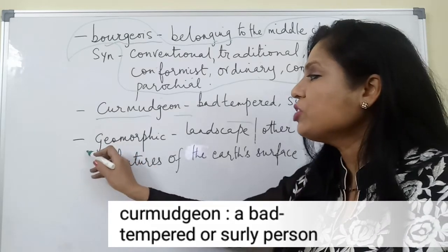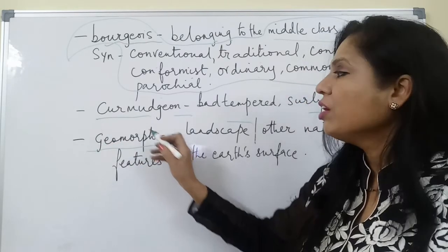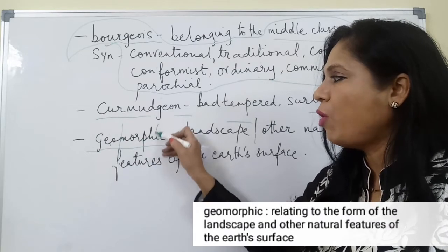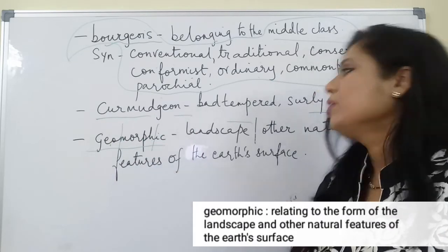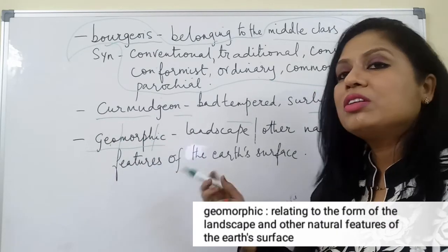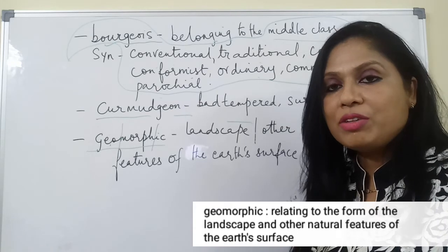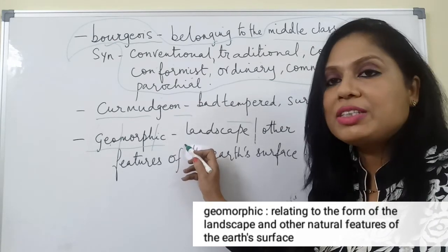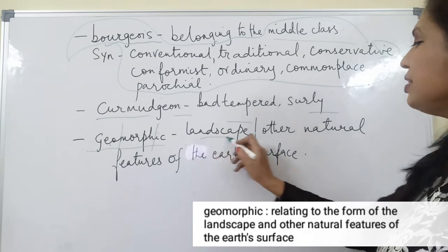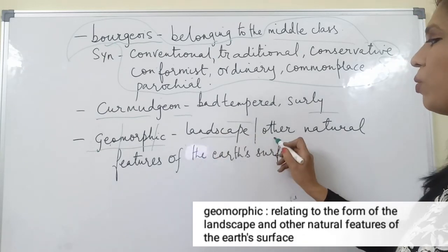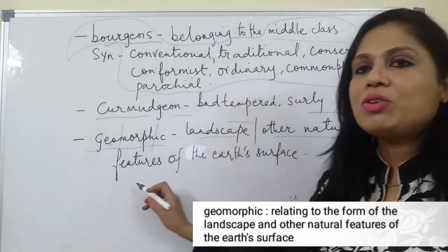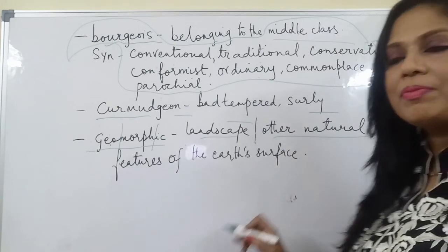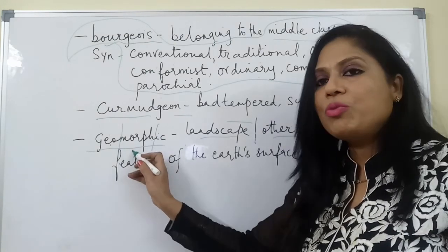The next word is geomorphic. It contains two roots — 'geo' and 'morph,' which means shape. So geomorphic refers to the shapes on the surface of the earth — simply the landscape or other natural features on the earth's surface.